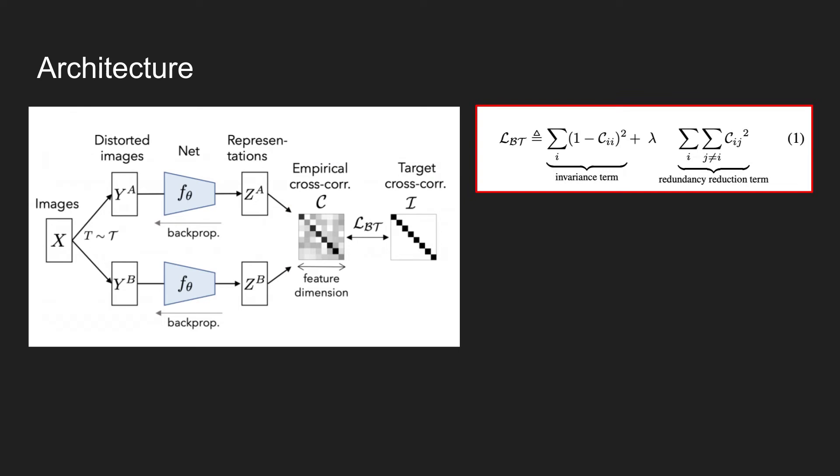The loss function denoted in the figure as L subscript B is shown on the right side. This is composed of two terms. First, the invariance term is in charge of making the diagonals of the square matrix to ones. And the redundancy reduction term makes other non-diagonal values to zero.